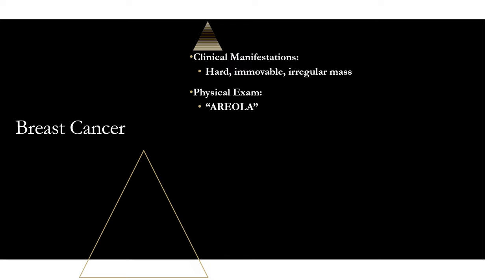A stands for axillary lymphadenopathy. Anytime you do a clinical breast examination, you need to check the axillary lymph nodes. The axillary lymph nodes receive 85% of all lymphatic drainage from the breast, meaning if breast cancer is going to spread to a regional lymph node, it's likely going to be the axillary lymph nodes. Axillary lymphadenopathy is one of the key findings in locally advanced breast cancer.